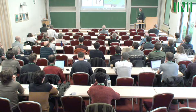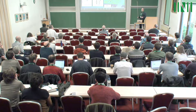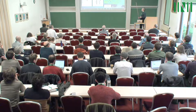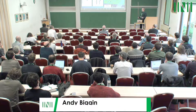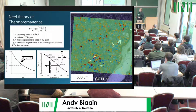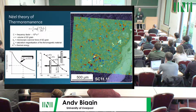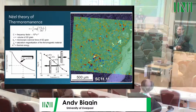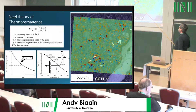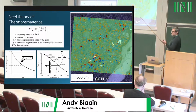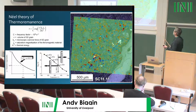Paleomagnetism's theoretical foundation was laid by Louis Néel in the 1950s. He showed how igneous rocks, as they cool down, could acquire a thermo-remanence that would be stable throughout geological history. What we're showing is the relaxation time tau, which depends on magnetic properties of individual single-domain grains and has an exponential dependence on temperature.